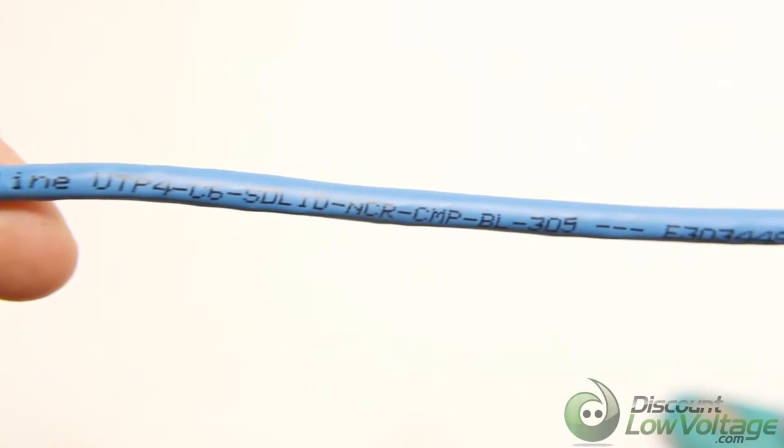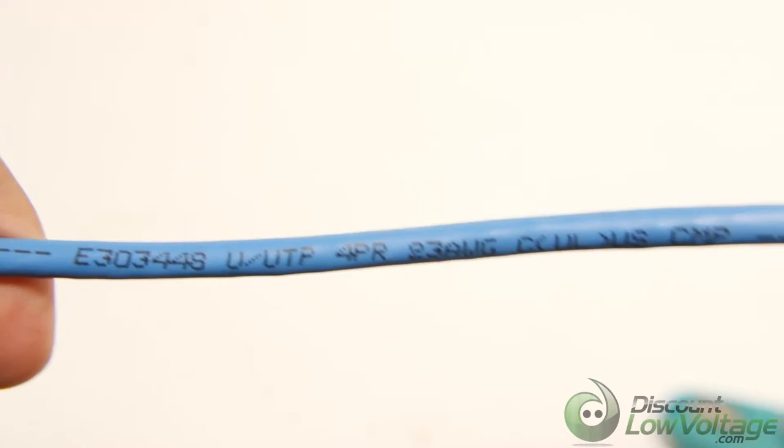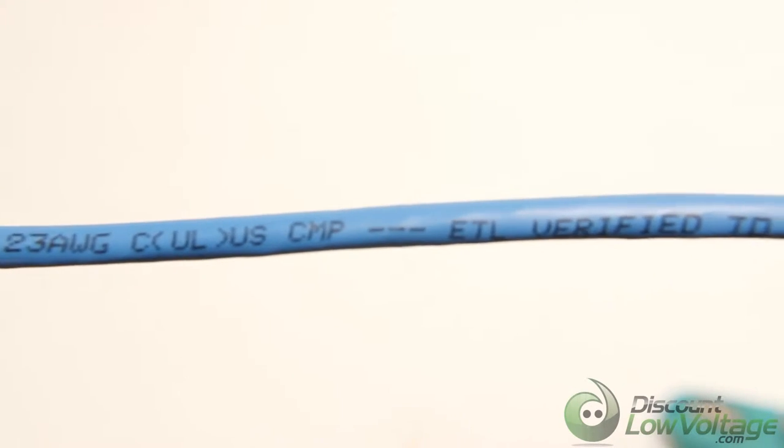This is Hyperline's four-pair 23-gauge CAT6 unshielded cable with gray plenum indoor jacket. This CAT6 bulk Ethernet cable comes in an easy-to-pull box and is UL certified.